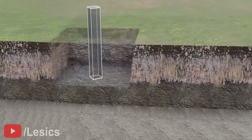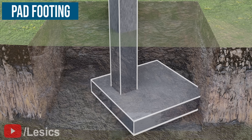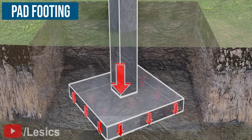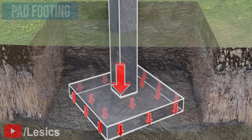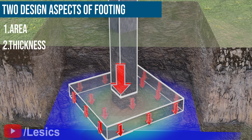To avoid these failures, you can increase the contact area between the soil and columns. By introducing a plate member — the footing — at the base of the column, the load will now be evenly distributed on the soil through the plate member. This increased contact area reduces the stress on the soil and the building stands strong. The main job of a structural engineer in footing design is to find out the area and thickness of the footing, determined according to the bearing capacity of the soil and weight of the building.